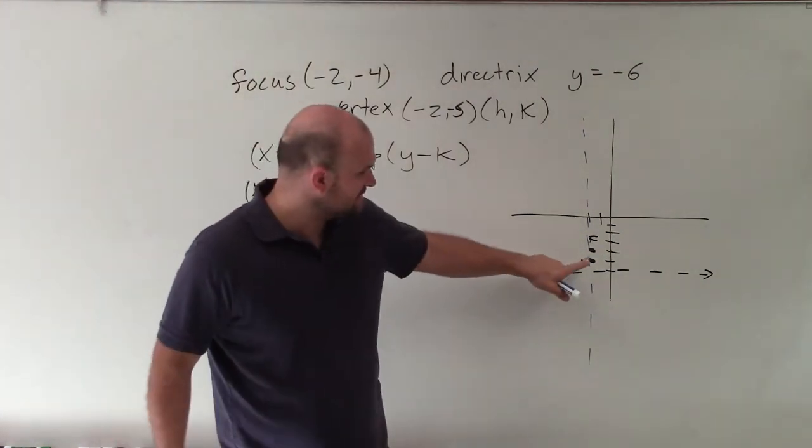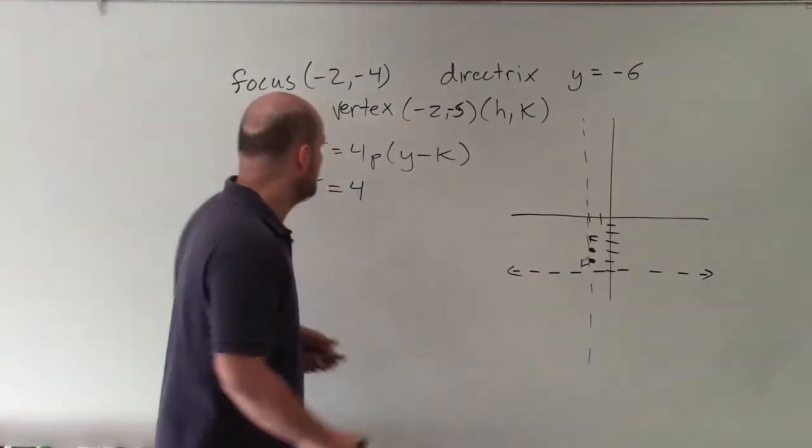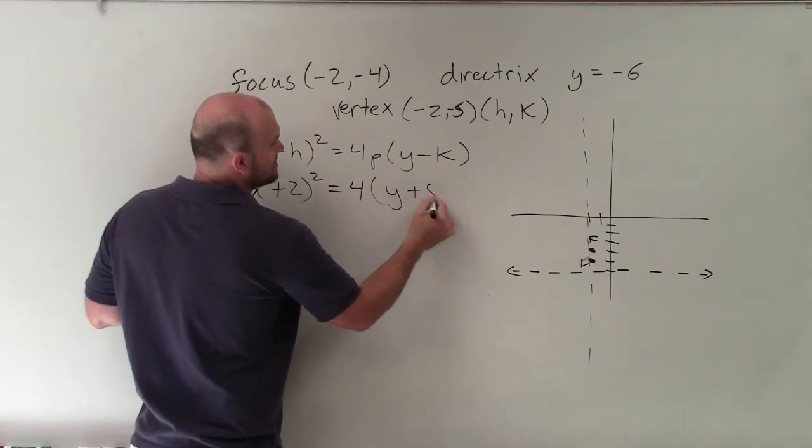Now we need to calculate what is the distance from v to f, our vertex to our focus. That's only 1. So 4 times 1 would just be 4 times y plus 5.